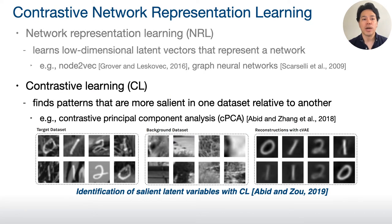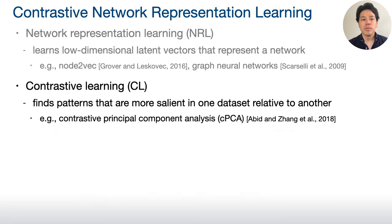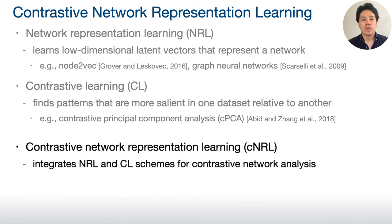Contrastive learning finds more salient patterns in a target dataset relative to a background dataset. For example, in this figure, by contrasting images containing both handwritten digits and glasses with images only containing glasses, contrastive learning can extract salient features in a target dataset. There are several contrastive learning methods, such as contrastive principal component analysis. Contrastive network representation learning integrates these two schemes.